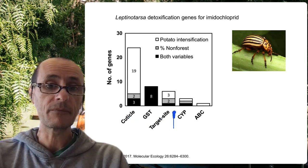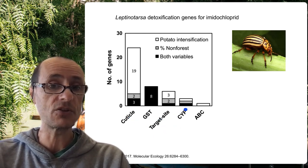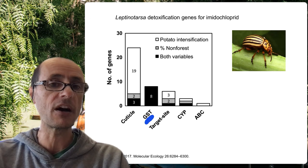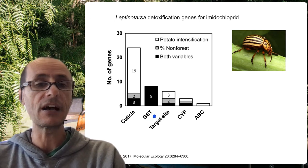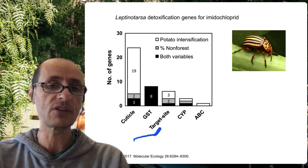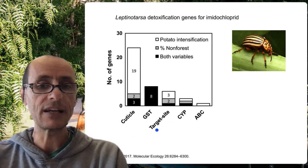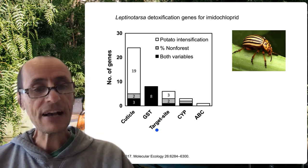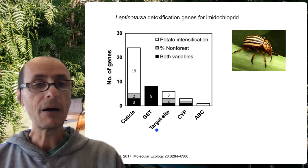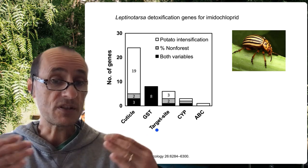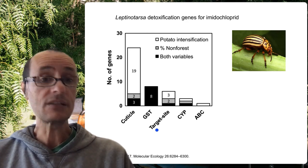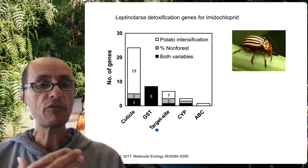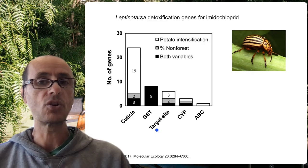Here are the cytochrome P450s — CYP genes. There's another class I didn't even mention, which are glutathione S-transferase genes, which get rid of sulfur-containing molecules. And here are traits for target site insensitivity. This is all to say that insects are not just passive partners in this relationship with plants, but they have the capacity to actually respond to and evolve resistance — traits that allow them to deal with these plant secondary compounds. And this really sets the stage for these reciprocal interactions between plants and herbivores.